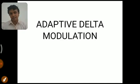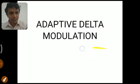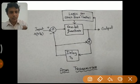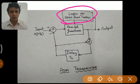In delta modulation, we sample the signal at a rate very much greater than the Nyquist rate, and we use a one-bit quantizer. In the feedback path we have a delay block. The same things are present in adaptive delta modulation, with the only difference being the presence of a logic block for step size control.